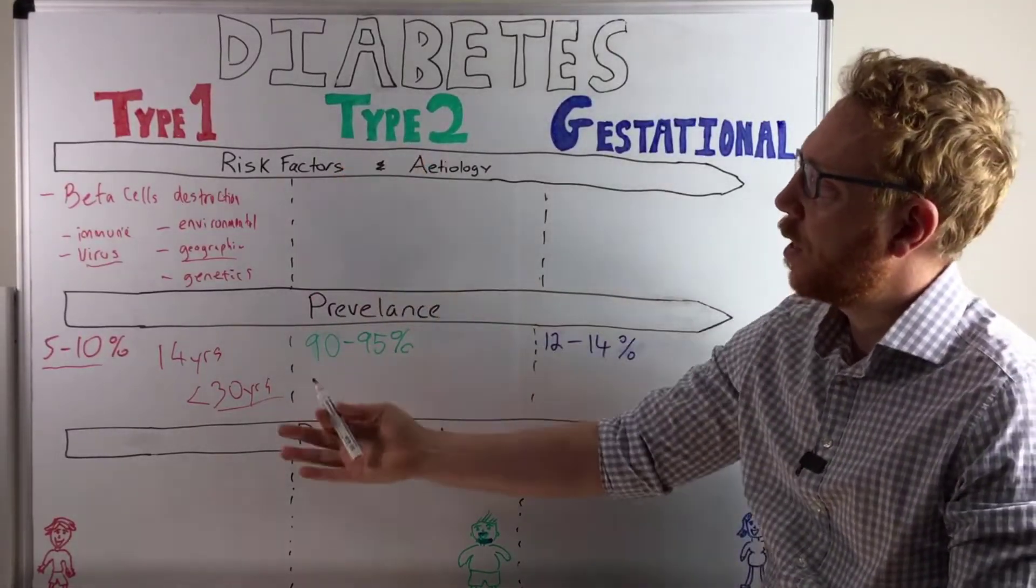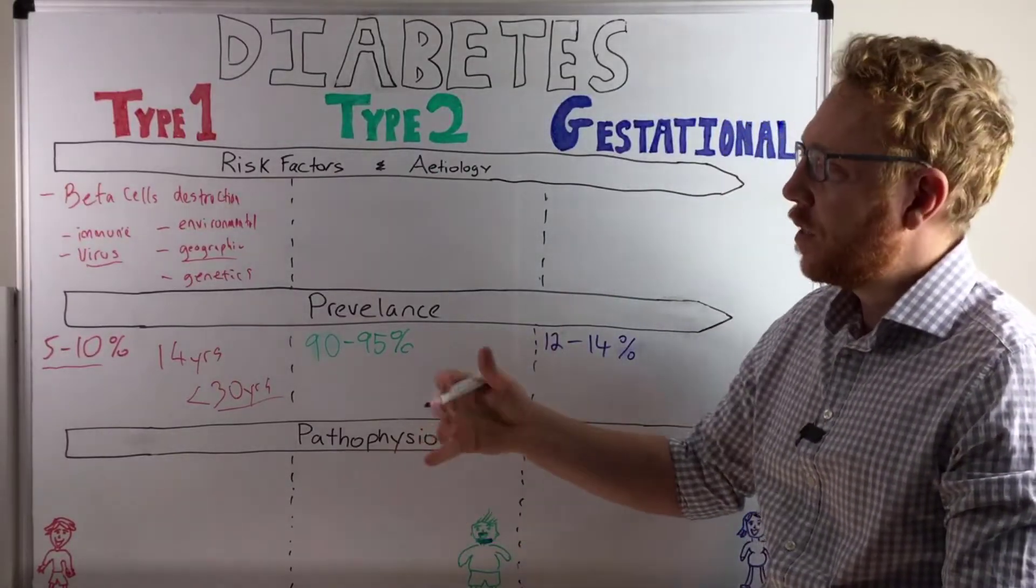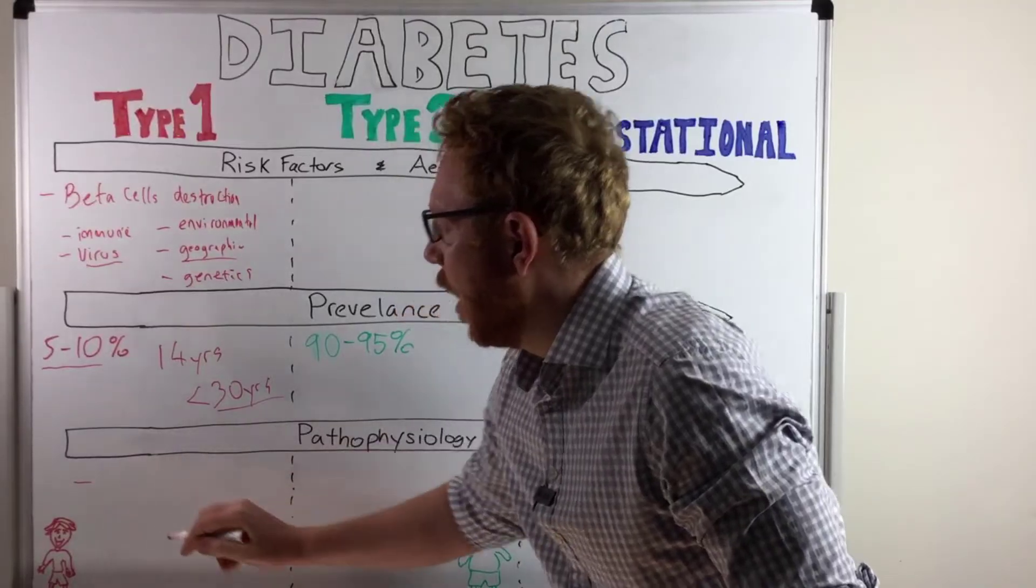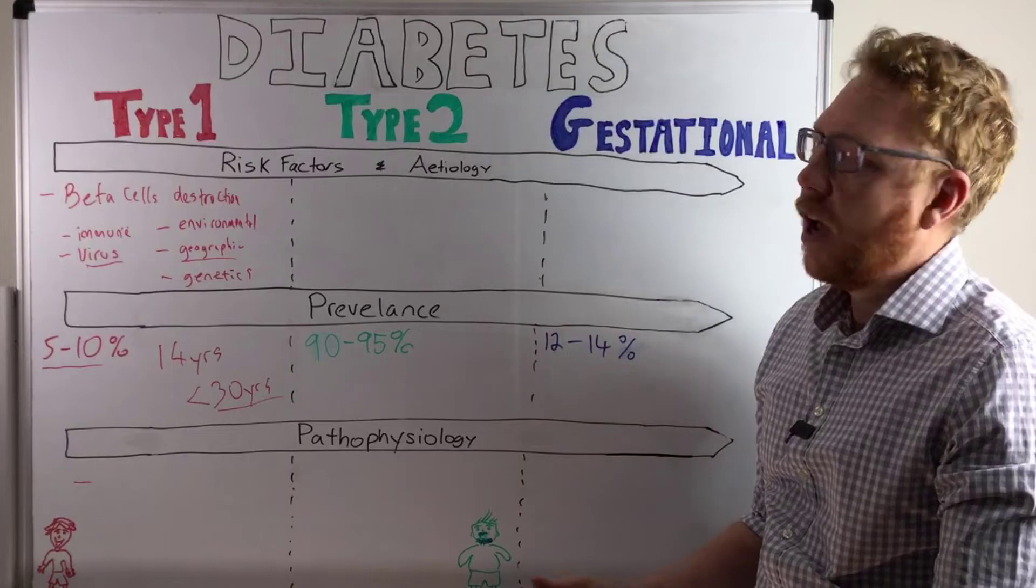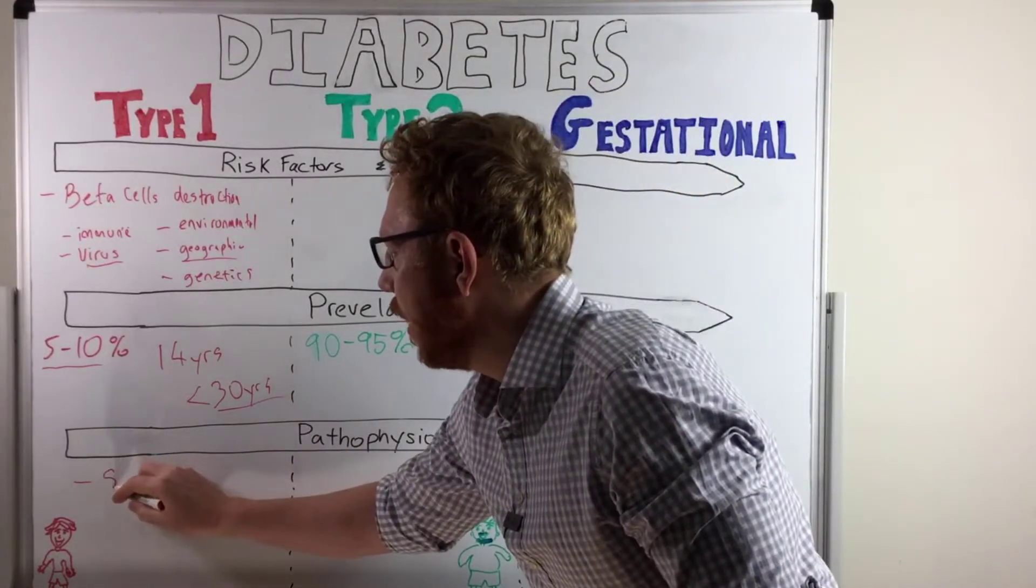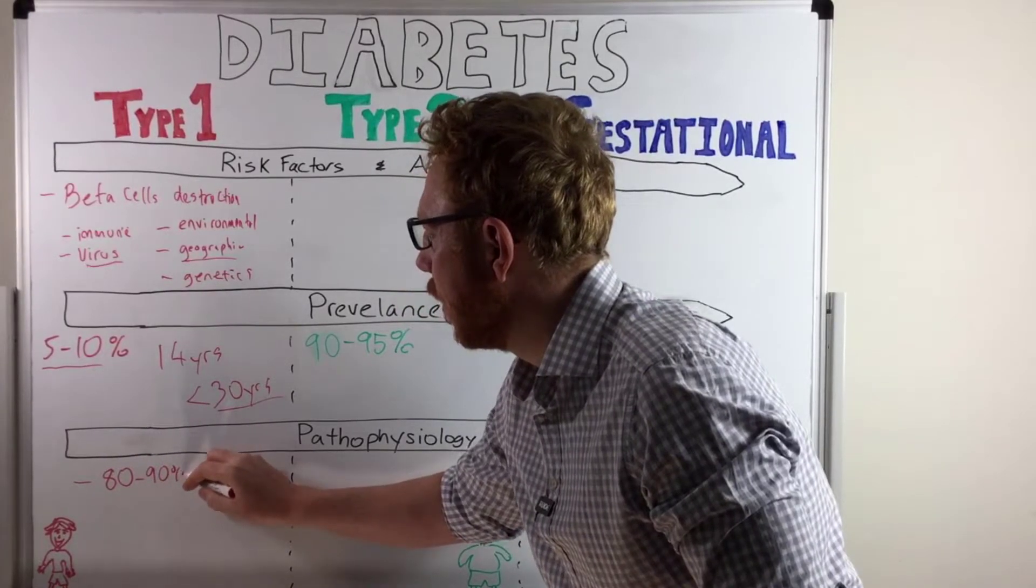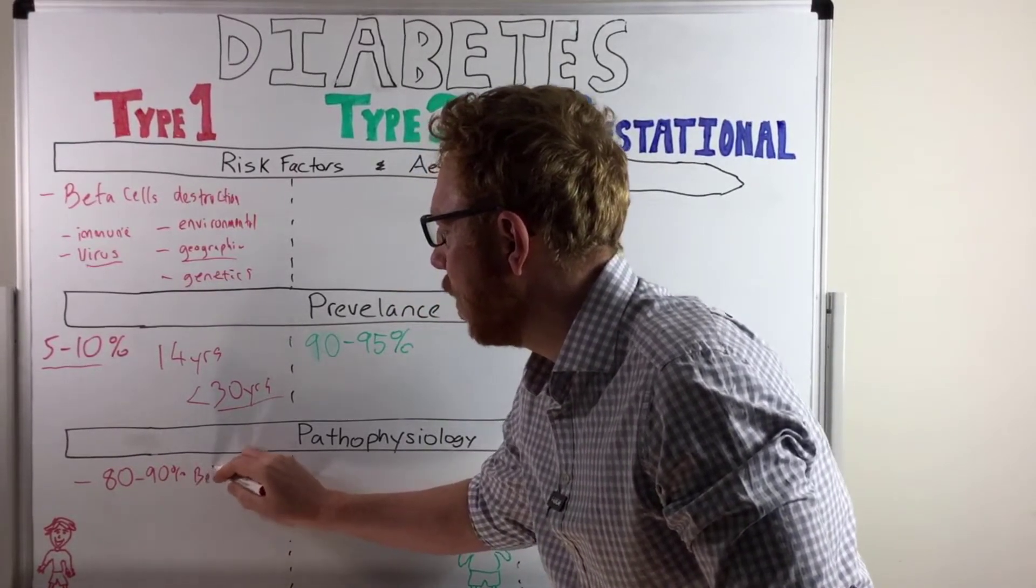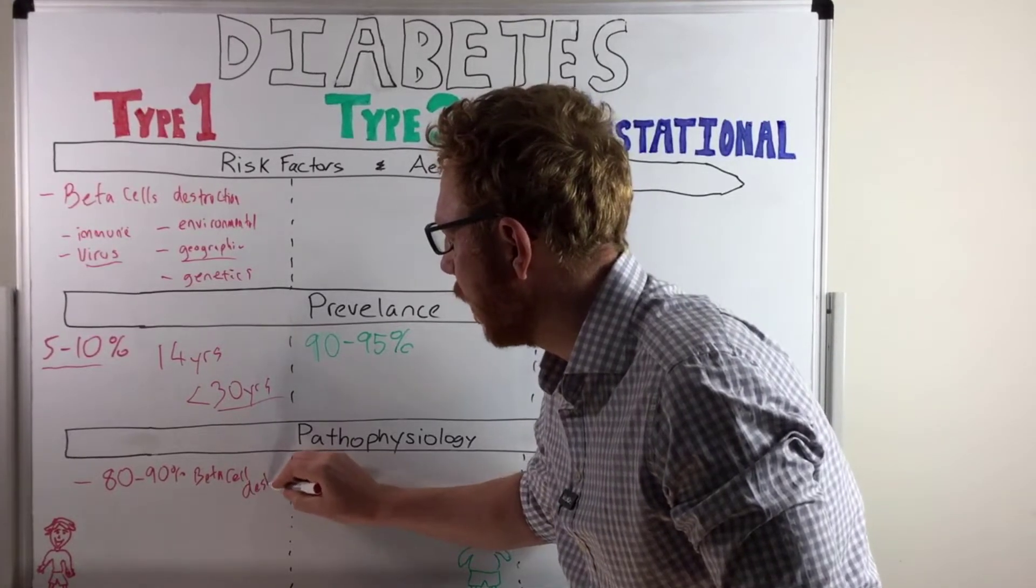Let's have a look at the pathophysiology. As I said, the first starting point is the destruction of the beta cells. For you to see the signs and symptoms of diabetes, so to see a clinical effect, you'd need at least 80 to 90% of beta cells, the ones that produce insulin, need to be killed, destruction.